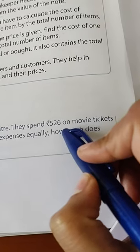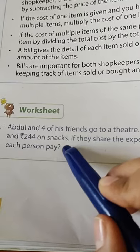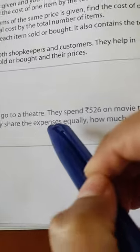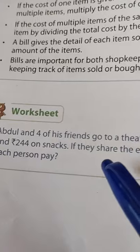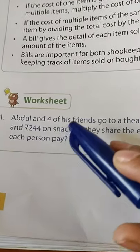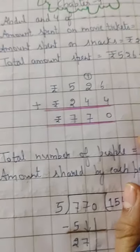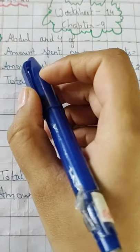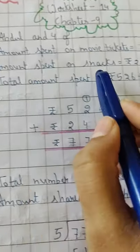They spend 526 rupees on a movie ticket and 244 rupees on snacks. Abdul and four friends means there are five people total. We have to find how much each person pays. First, we find the total amount spent. Amount spent on movie ticket is rupees 526, amount spent on snacks is rupees 244.